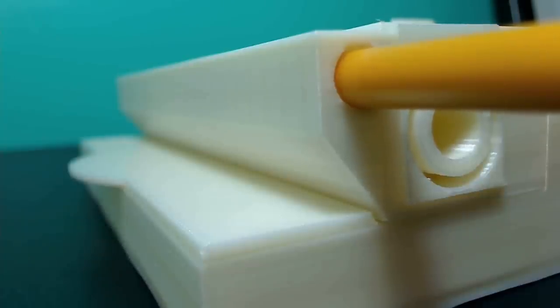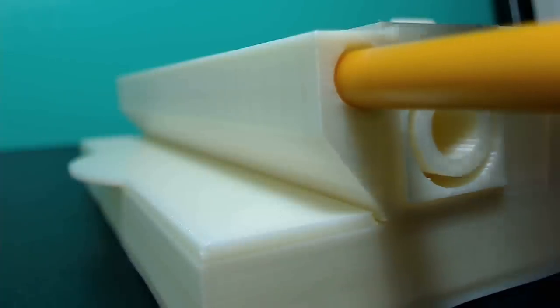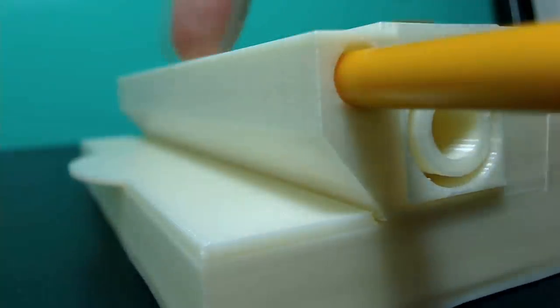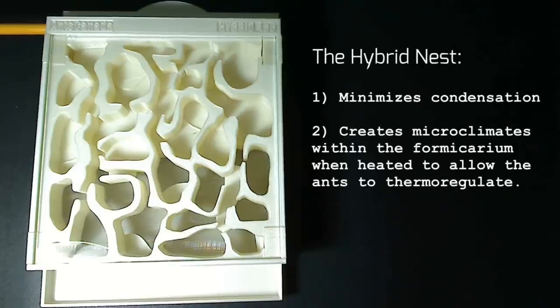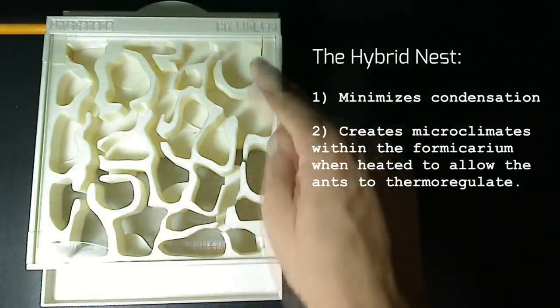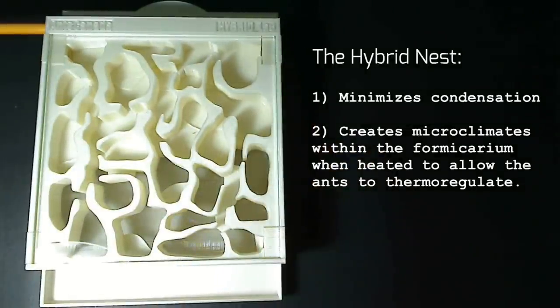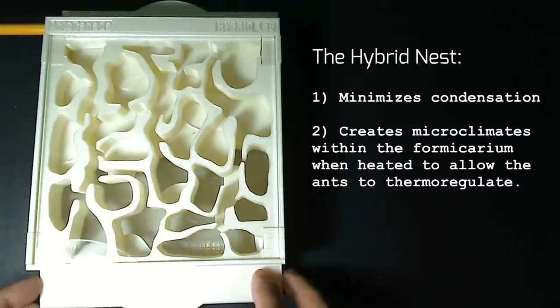We've built the hybrid nest to have a heat cable tunnel at the top which allows for heat to enter the top of the nest, similar to how the sun heats a nest in the wild. It's also situated in such a place that it eliminates condensation, which is a notoriously common issue with heated formicariums, and it also creates a desirable temperature gradient for healthy thermoregulation of your ant colony.